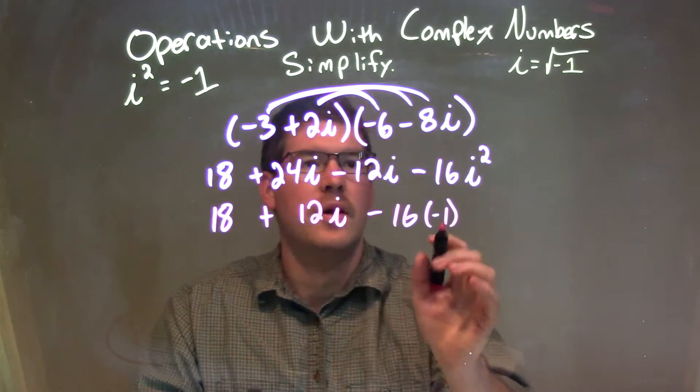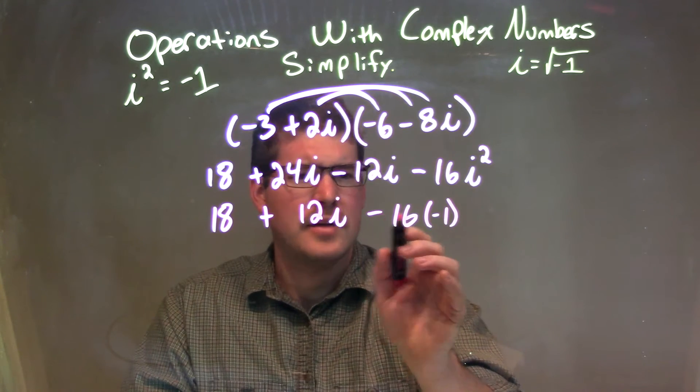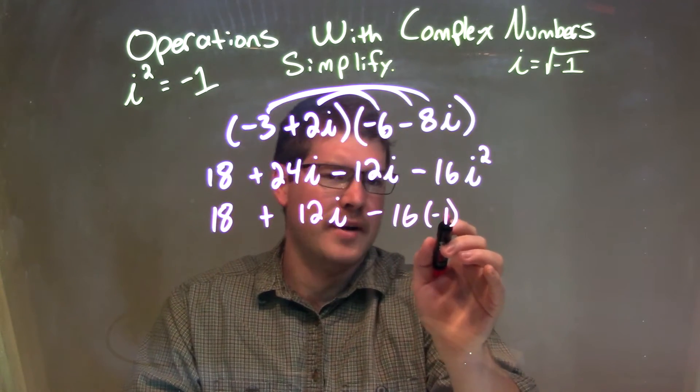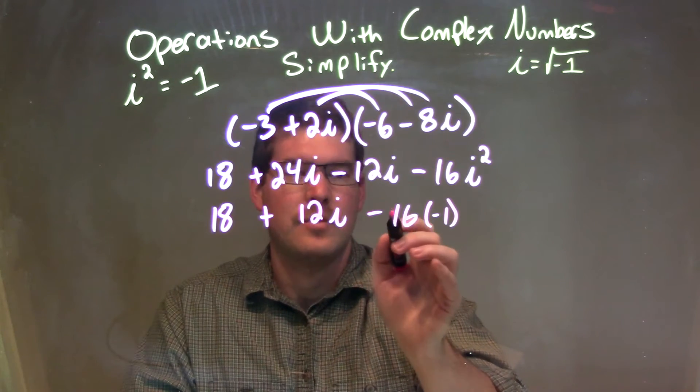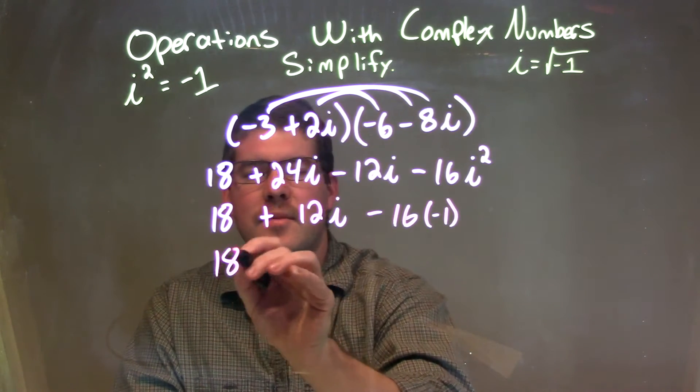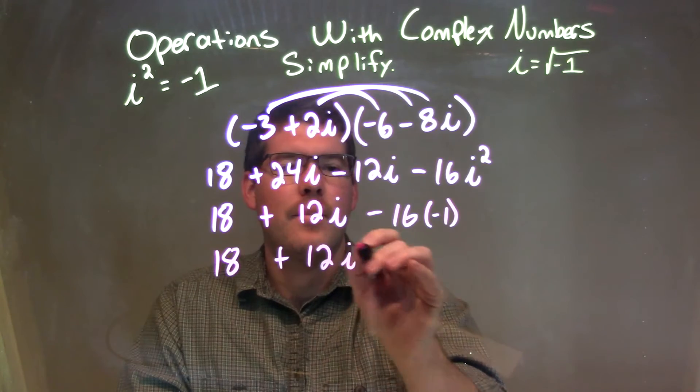24i minus 12i is positive 12i. And then here, the negative 16i squared becomes a negative 1, alright? So, now we see, okay, negative 1 times 16 is negative 16, not a negative, so it's a positive. So, we have 18 plus 12i plus 16.